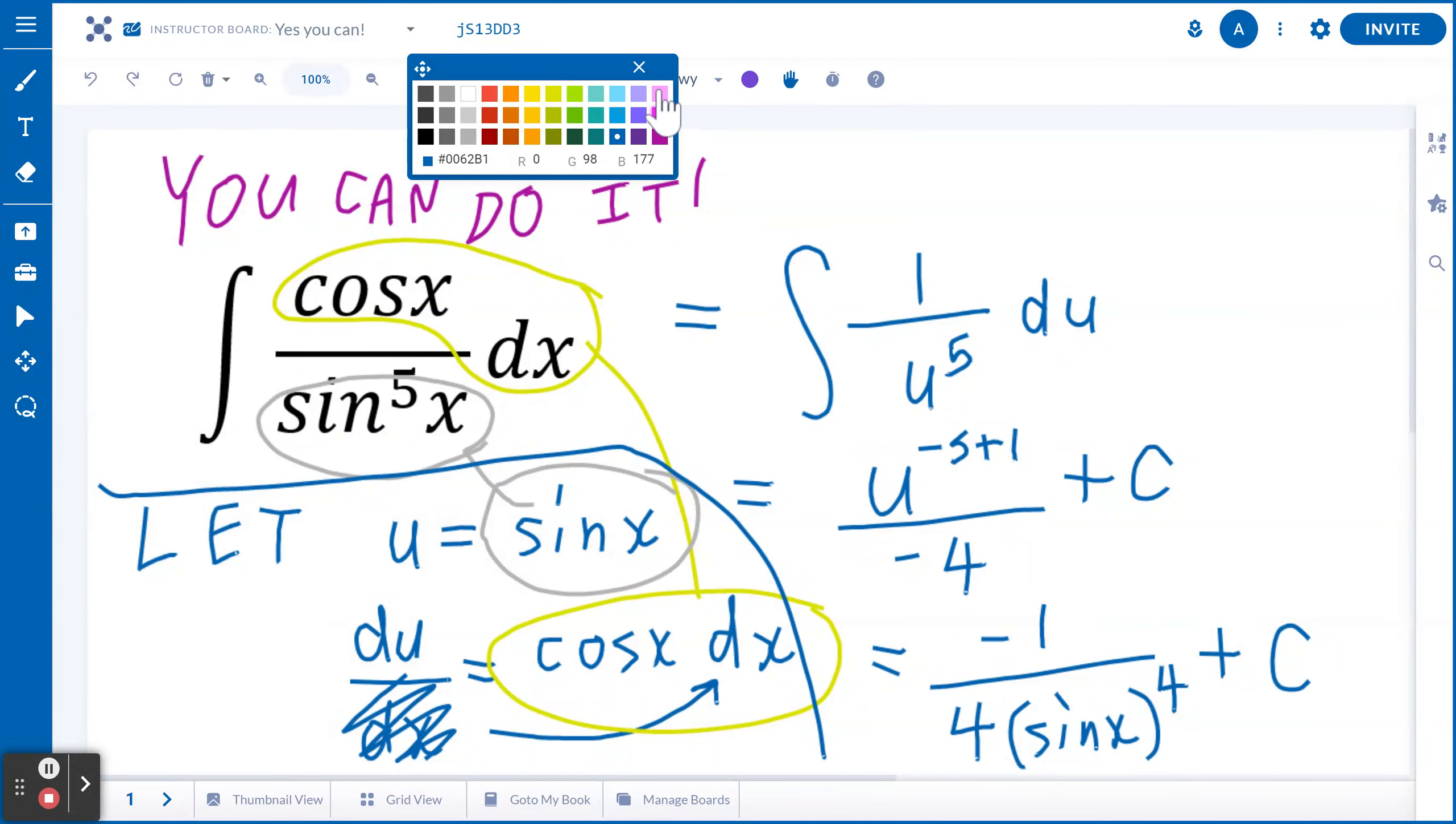Now, if you would like to verify it, if you're doing it right, all you have to do is spend one extra minute, find the derivative of y equal to negative 1 divided by 4 sine x to the power of 4 plus c, and you'll get exactly the question back. I hope this makes sense.